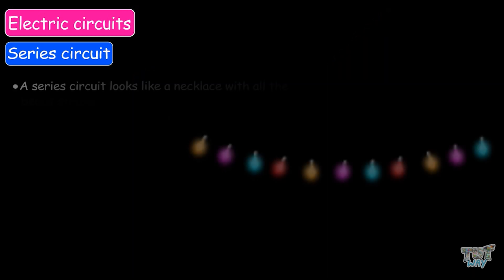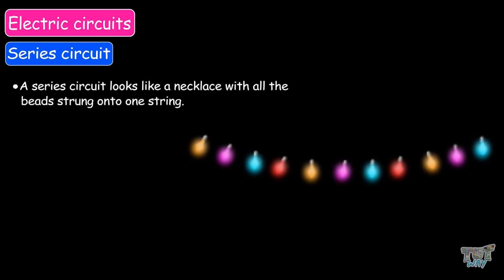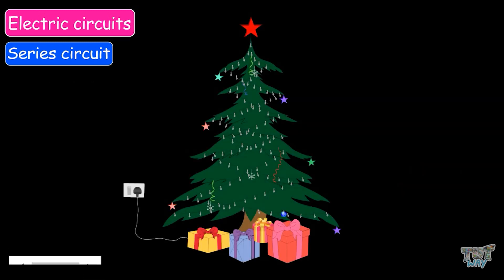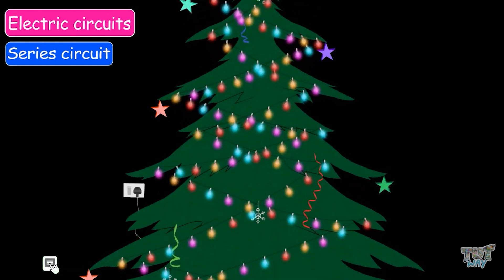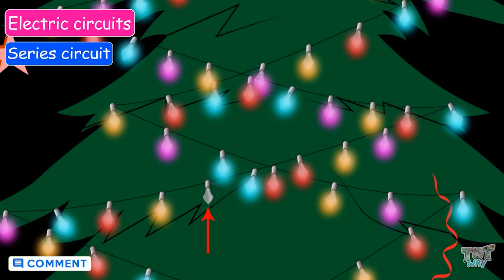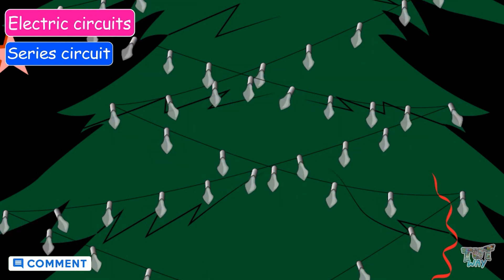A series circuit looks like a necklace with all the beads strung onto one string. Here is an interesting example: do you put on Christmas lights on the trees at home during Christmas? Christmas lights are connected in series. If one light stops working, the rest of the lights should go out.